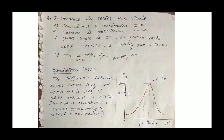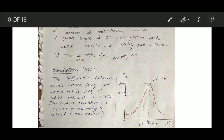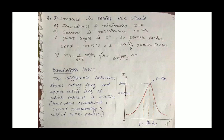To summarize what happens at resonance in a series RLC circuit: impedance is minimum, Z equals R; as impedance is minimum, current is maximum; the phase angle is 0 degrees; and the power factor equals cos(0°) equals 1, giving unity power factor. We can also calculate the resonant frequency in terms of hertz and in terms of radians per second.